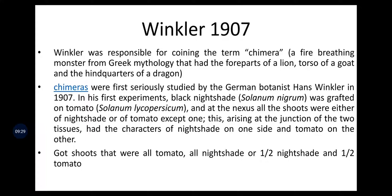Using that idea, Winkler worked in plants. He was a German botanist who in his experiment took black nightshade, Solanum nigrum, which was grafted on tomato, Solanum lycopersicon. At the nexus, all the shoots were either of nightshade or tomato except one arising at the junction of the two tissues, which had the character of nightshade on one side and tomato on the other — some part showing 50-50 characters.